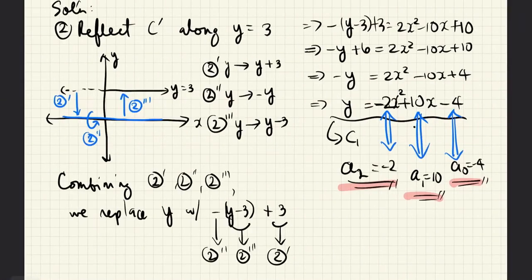Next, we reflect the new graph along y equals 3. To do that, first, we move the graph downwards three units. So that y equals 3 would now coincide with y equals 0.